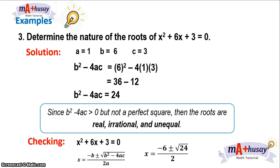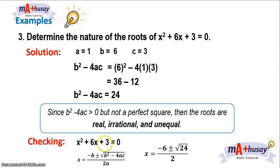So again, if your discriminant is greater than zero but not a perfect square, the roots are real, irrational, and unequal.